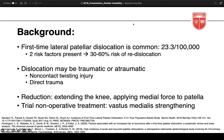First-time lateral patellar dislocation is relatively common. A recent study from the Mayo Clinic suggested an incidence of 23 per 100,000 individuals, but in those aged 14 to 18 the incidence was higher at about 150 per 100,000. If you have two risk factors present, your risk of re-dislocation increases to 30 to 60 percent. Dislocation can be traumatic or atraumatic — atraumatic is often during sporting activities with a non-contact twisting injury on a slightly flexed knee.